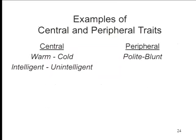Asch determined that some traits really seemed to be central in the sense that they had a radical, extraordinarily large effect on impression formation. Other traits, when changed, didn't matter very much. The two traits that most consistently emerged as central were warm and cold, as in experiment one. There was another experiment in which he varied intelligent versus unintelligent, and that also made a huge difference — whereas words like polite and blunt were more peripheral because changing them didn't seem to make much difference.